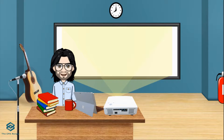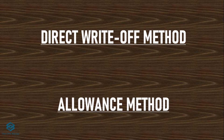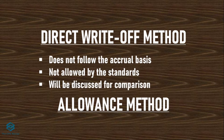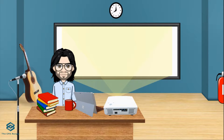So how do we account for bad debts? There are actually two ways: the direct write-off method and the allowance method. However, the direct write-off method does not follow the accrual basis and is thus prohibited by the standards. We will discuss it only for comparison and appreciation purposes. Remember, it does not follow the accrual basis as required by PAS-1.